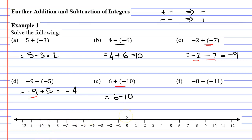And we'll work that out on the number line, starting at six and moving ten places to the left: two, three, four, five, six, seven, eight, nine, ten, landing on negative four.